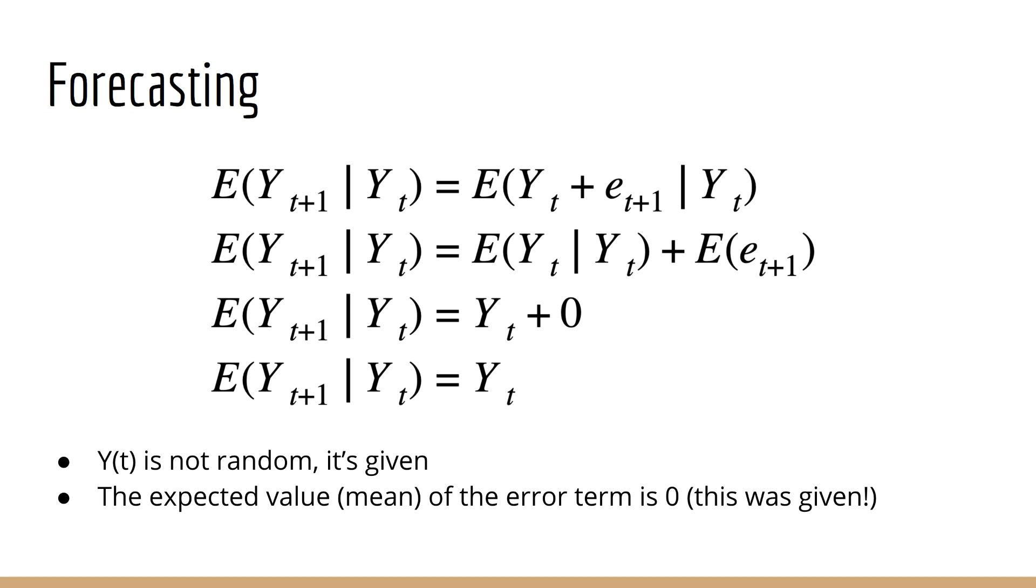Since the expected value is a linear operator, we can split it up into two terms. The first term is just the expected value of Y(t) given Y(t), which is obviously just Y(t). For the second term, we can drop the given Y(t) part because the error term is independent of Y(t) - it just comes from the Gaussian distribution we saw earlier. That Gaussian distribution had mean zero, which means the expected value of this error is zero. Therefore, the expected value of Y(t+1) given Y(t) is just Y(t).